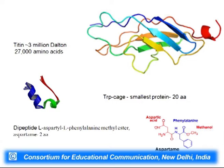Protein primary structure is not bounded by a fixed number of amino acid residues. There could be as few as 20 amino acids forming the smallest protein, the TRP cage, while the protein titin has 27,000 amino acids joined in sequence. Titin is a fibrous protein found in muscles — relevant for muscle contraction and also for guiding chromosome movement towards the centriole during mitosis.